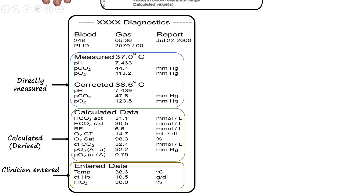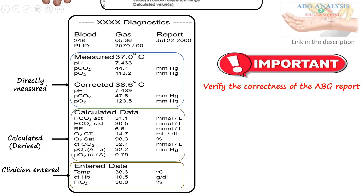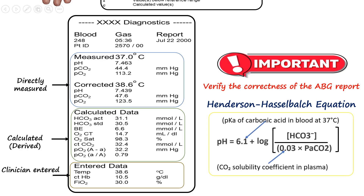Before beginning interpretation, it is essential to verify the internal consistency of the ABG values to rule out sampling errors. This is checked using the Henderson-Hasselbalch equation, which mathematically relates pH, bicarbonate, and PaCO2. The measured pH from a blood gas test should closely match the calculated pH from the Henderson-Hasselbalch equation if the values of PaCO2 and bicarbonate are correct.